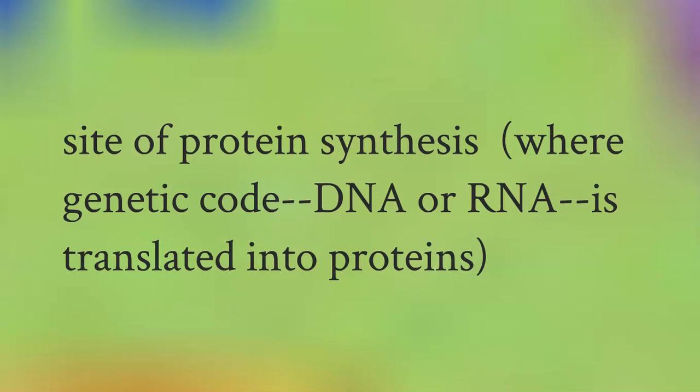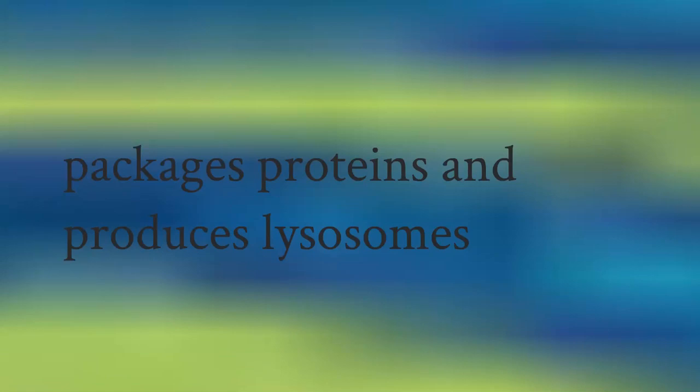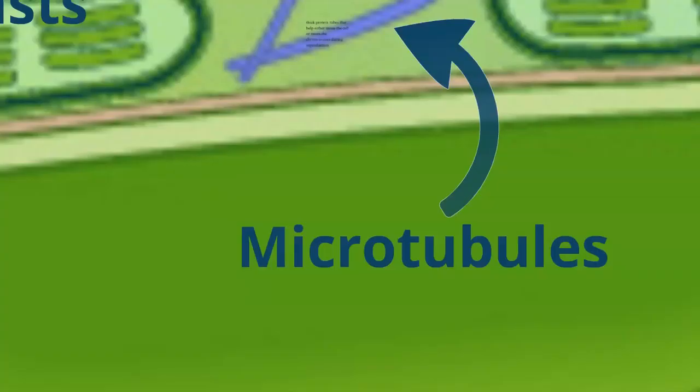And you can tell the difference because the rough endoplasmic reticulum has little ribosomes stuck all over it. And this is where proteins are made. So where the genetic code from the nucleus is translated into proteins. So synthesis means like to make. So you're making proteins. And then the Golgi apparatus packages those proteins up, but also produces lysosomes.